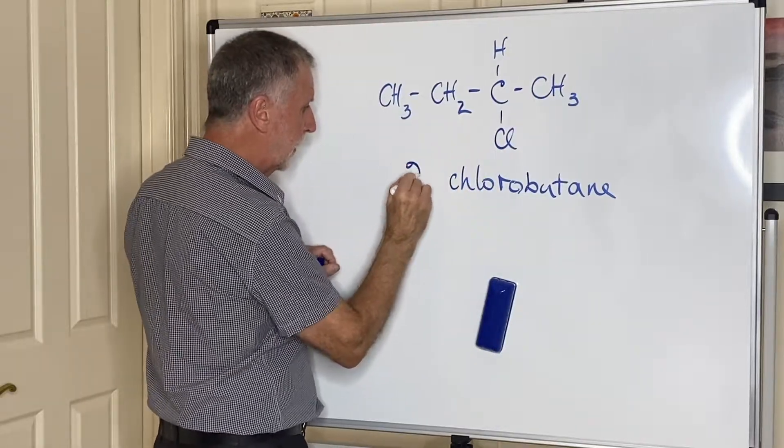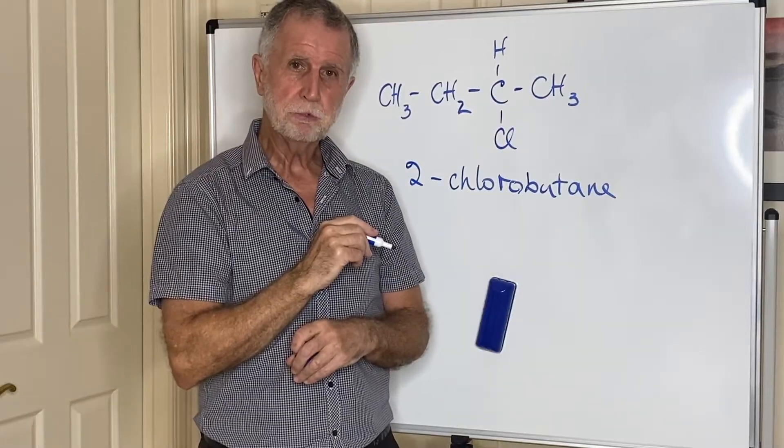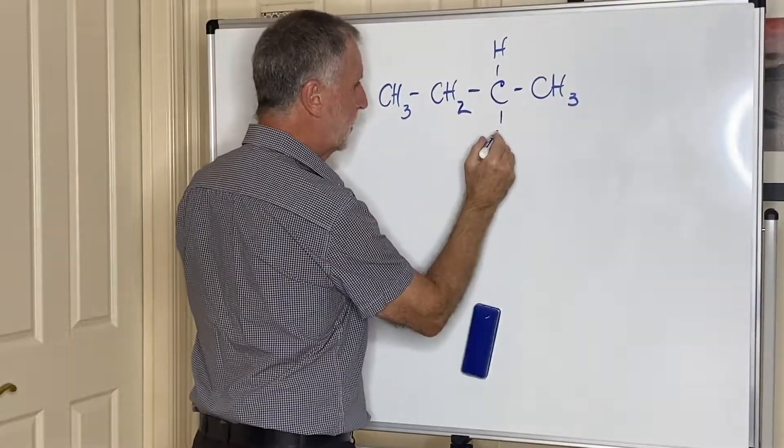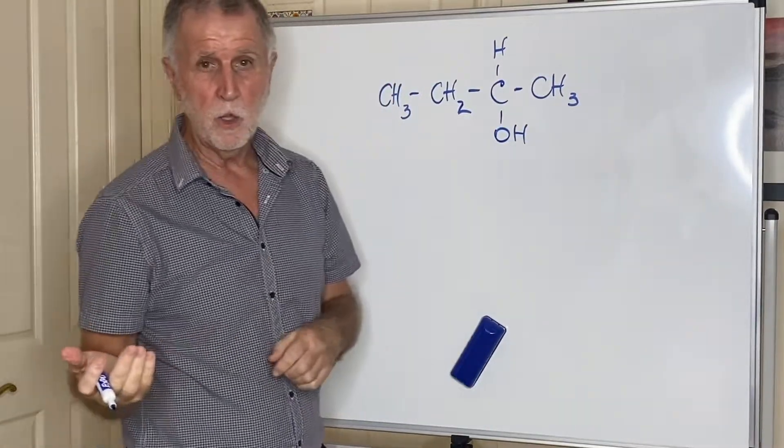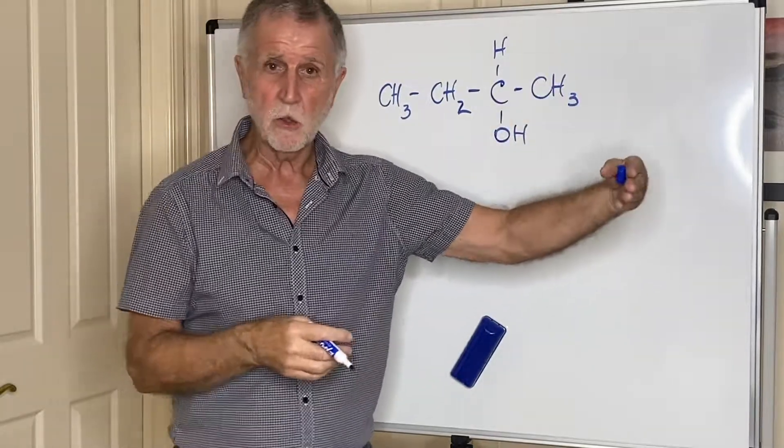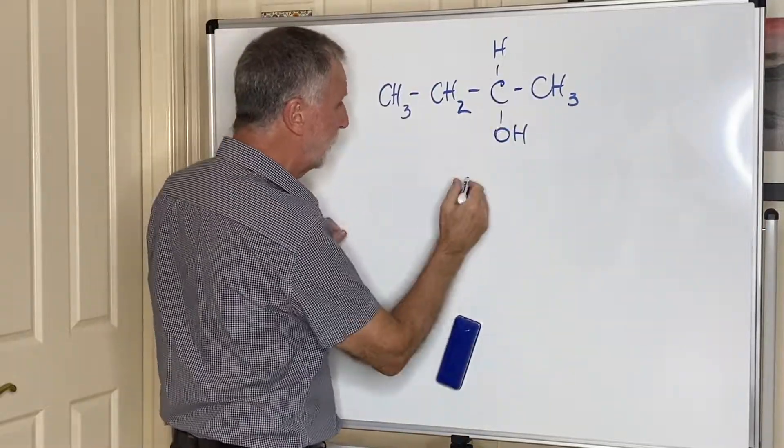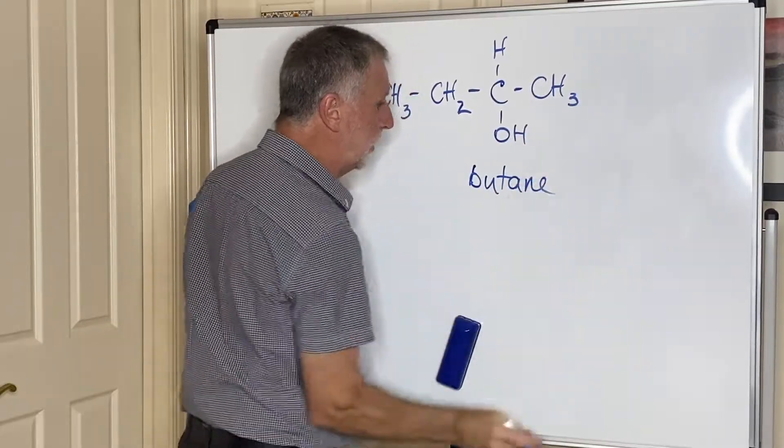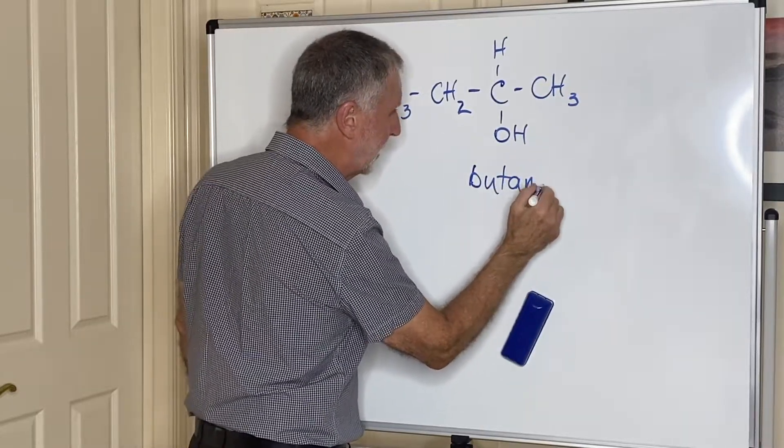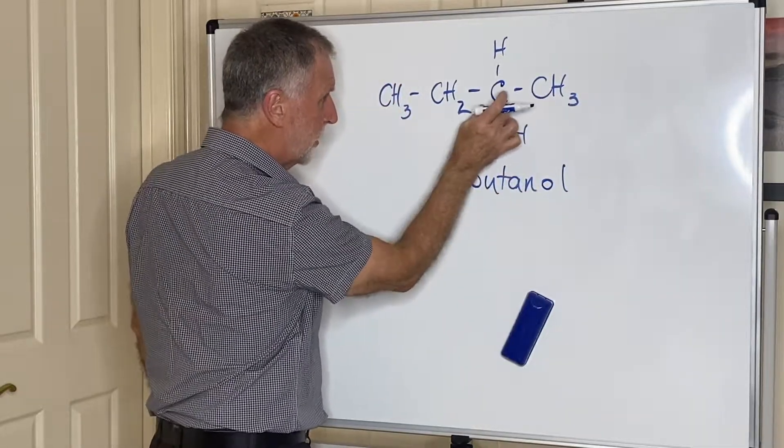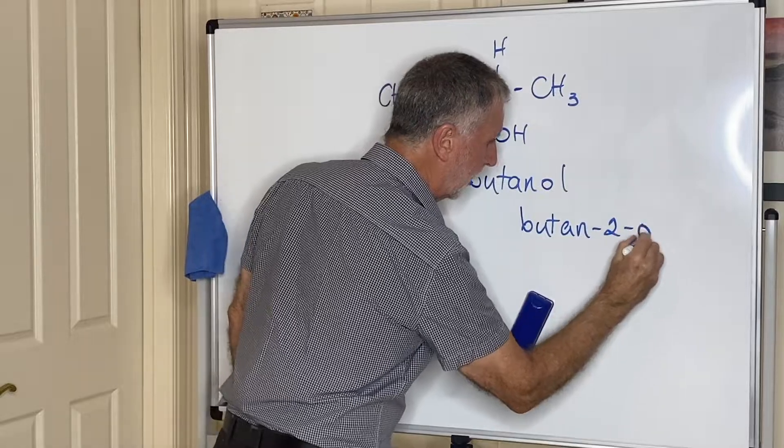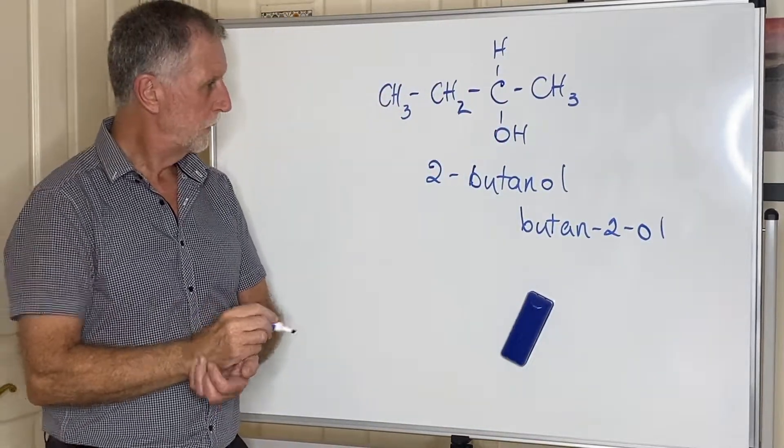Let's change this to an OH group and now we have an alcohol. Except for the halogens, all of them tend to be suffixes at the end of the word. To name an alcohol is really easy: first we have four carbons so it's butan. We drop the E of butane, not the -ane just the E, and add the ending -ol. Since the OH is on carbon two, it's 2-butanol or butan-2-ol.